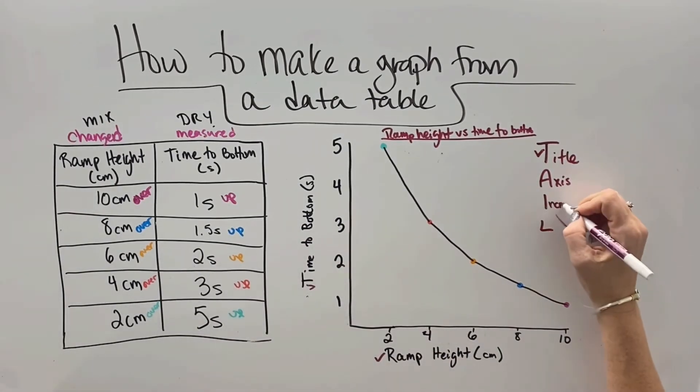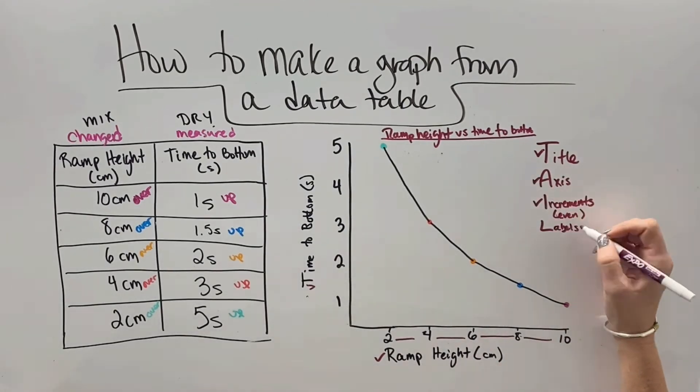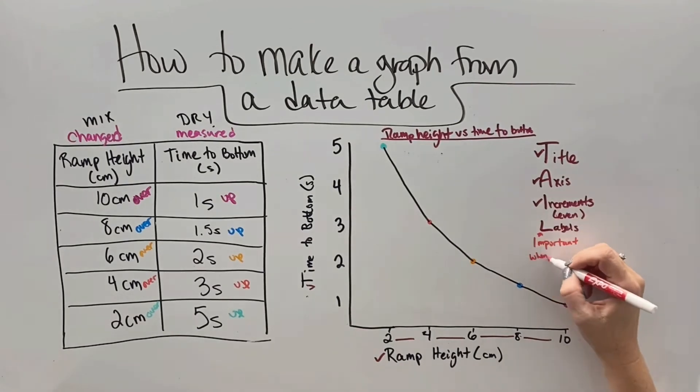The axes need to be labeled, which we did. The increments on the axes need to be broken evenly, so our data makes sense. And then any labels on lines, which are usually going to be for things where we have multiple data sets, which we'll see with our next example.